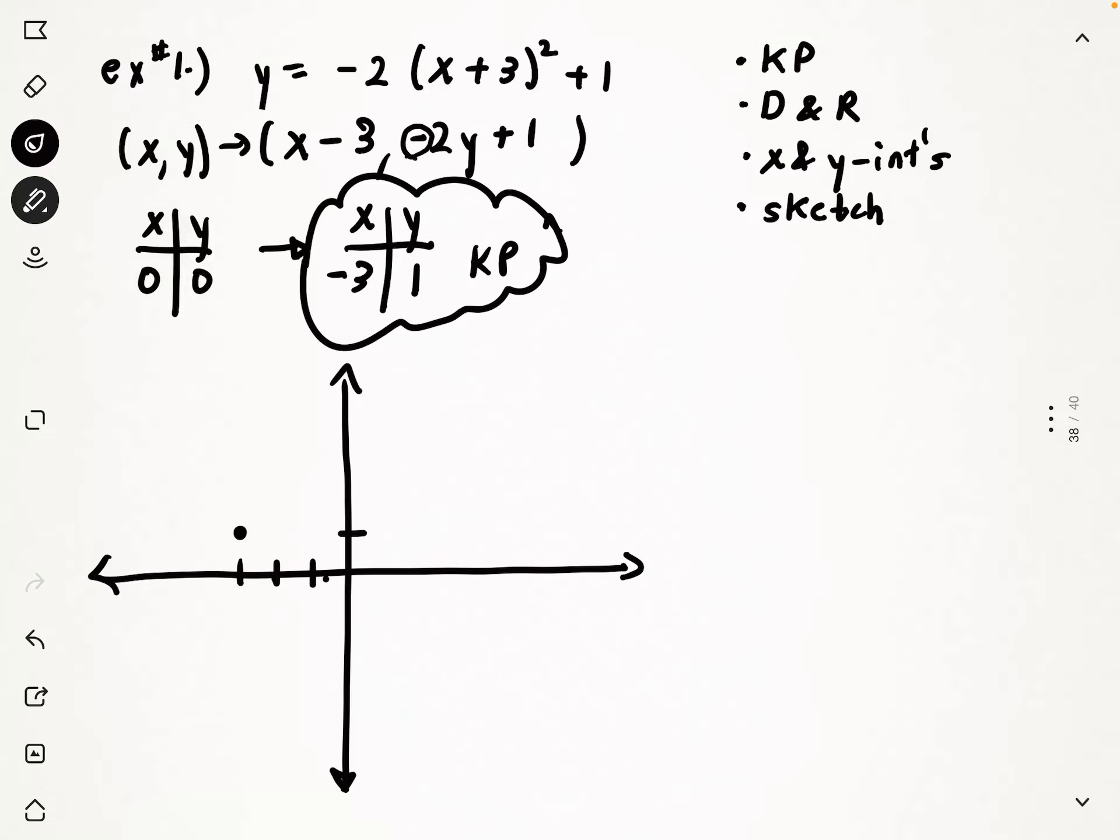So this is going to be an upside down parabola. So it's going to look something like that. Now again, when I find my x and y intercepts, I may have to fine tune this graph a little bit, but that's good enough for me to get—well, I've already gotten the key point.